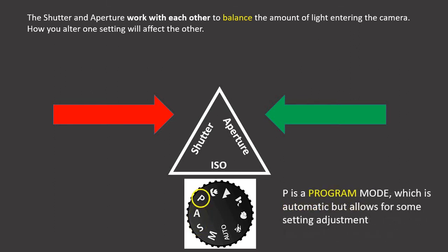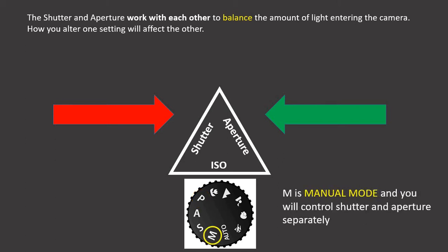There is a programmable mode denoted by P. This is the same as auto but you have settings that you can change within that. Fully auto you can't change anything and the camera is totally in charge — there are good reasons for not letting it be in charge because it will make mistakes. P is the best mode to use if you want programmable control, because when you change a setting like ISO that change stays permanent. Finally we've got the manual mode where you're in control of aperture, shutter and ISO and you have to get them right.